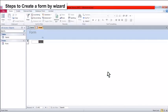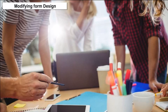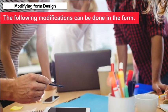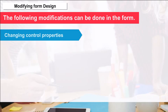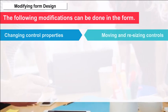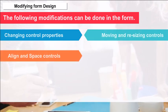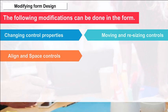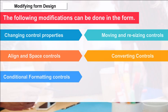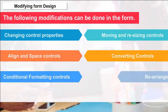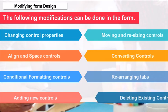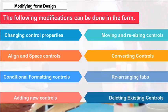Modifying Form Design: The following modifications can be done in the form — changing control properties, moving and resizing controls, aligning and spacing controls, converting controls, conditional formatting controls, rearranging tabs, adding new controls, and deleting existing controls.